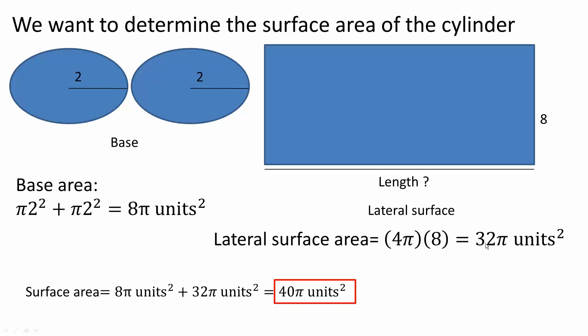Finally, add these two pieces: 8π plus 32π will give us 40π units squared. This right here is the total surface area for our cylinder.